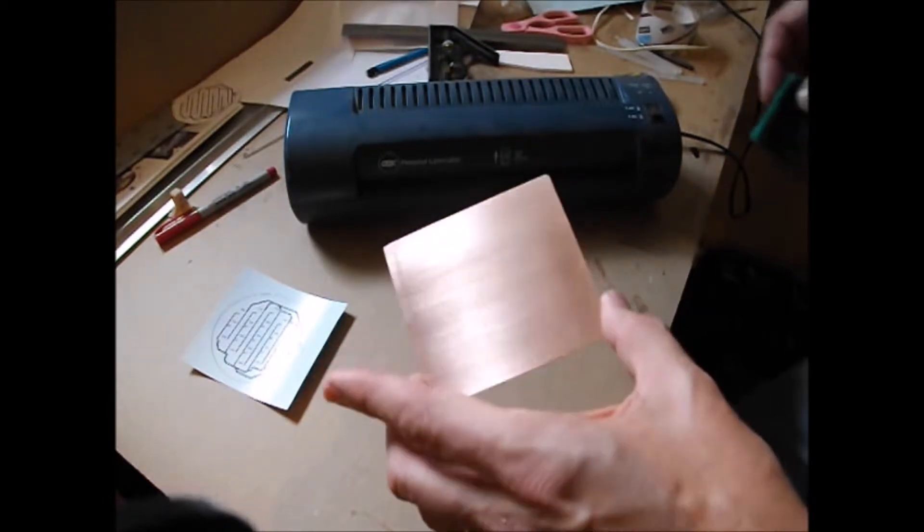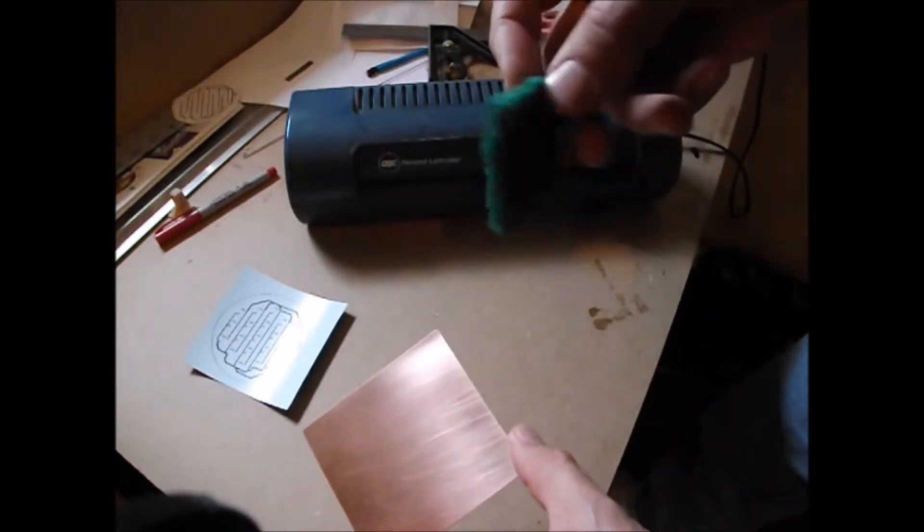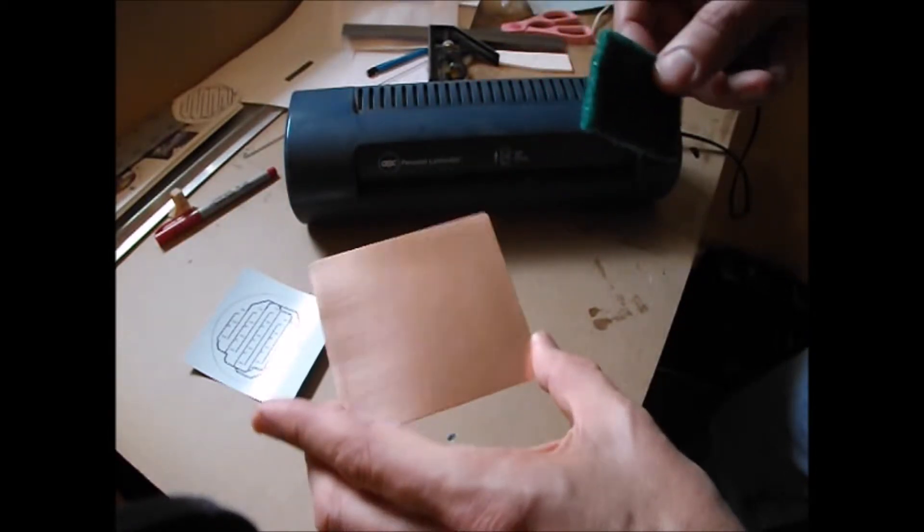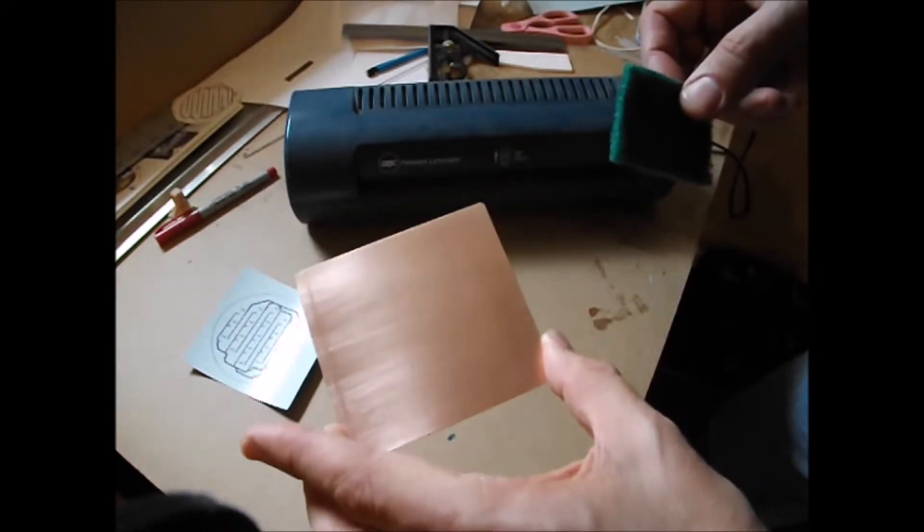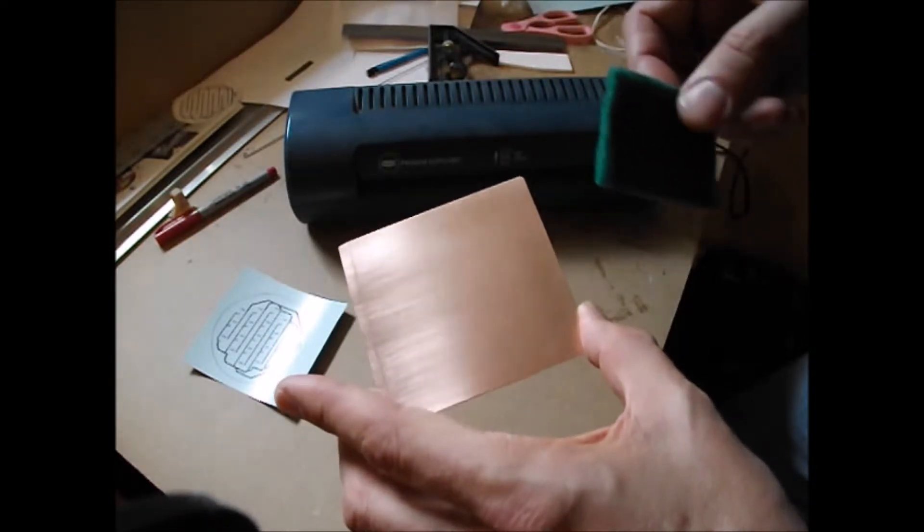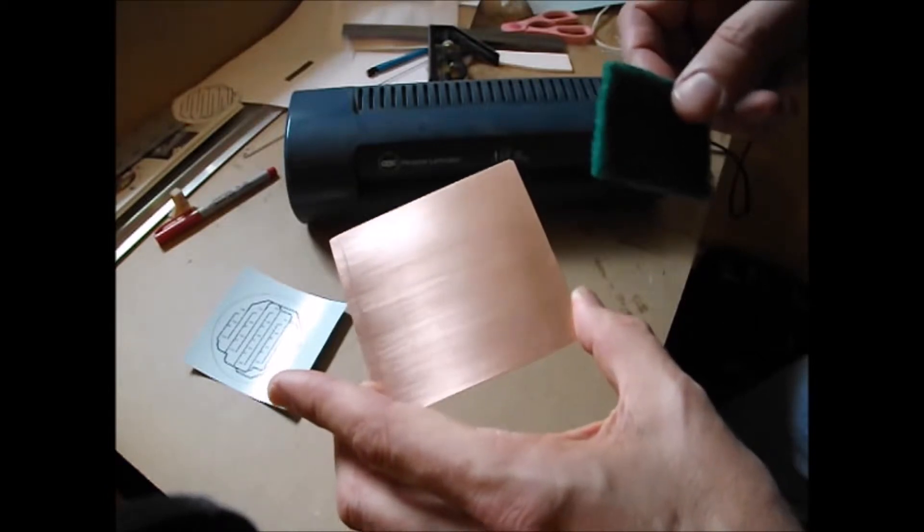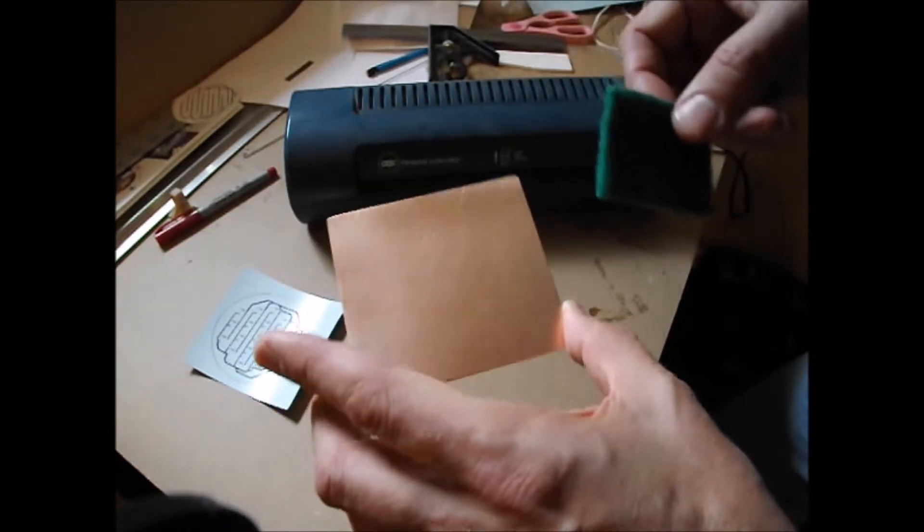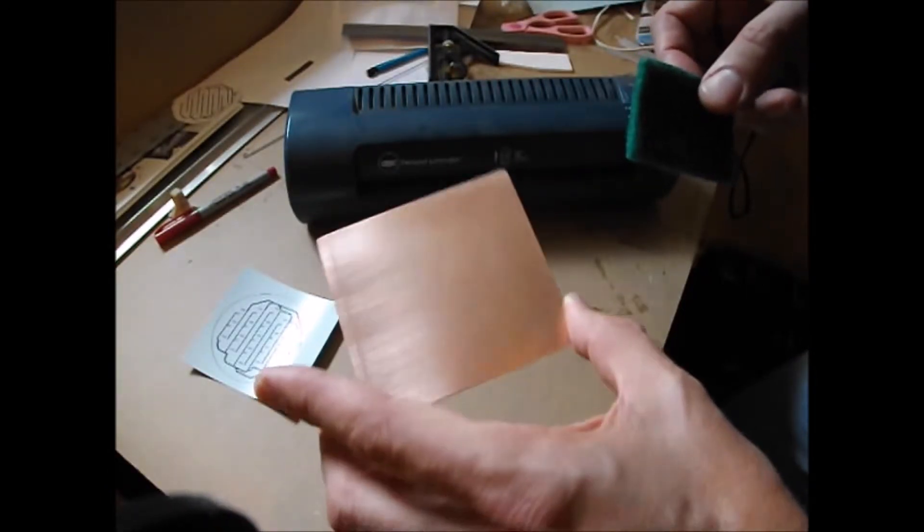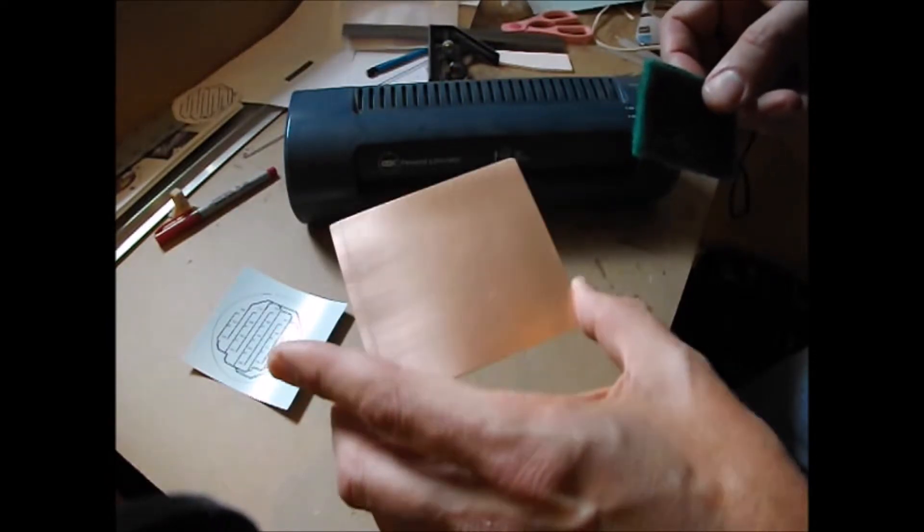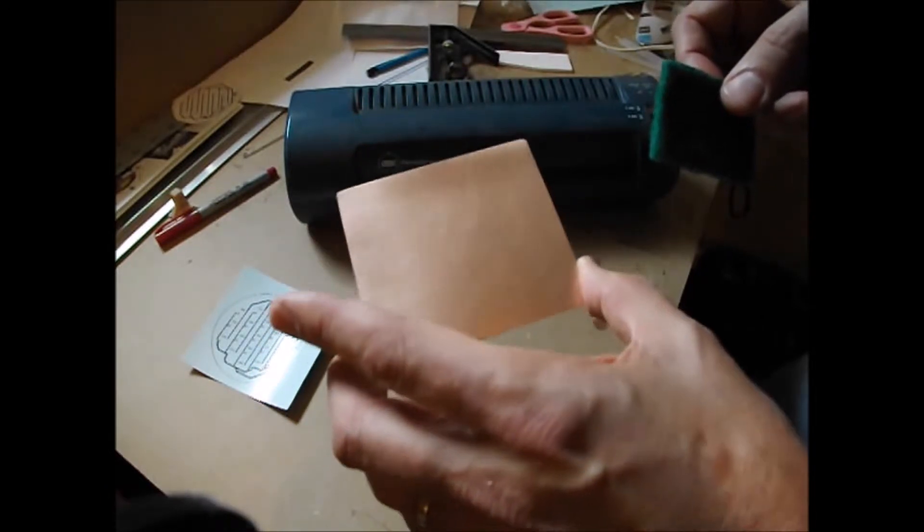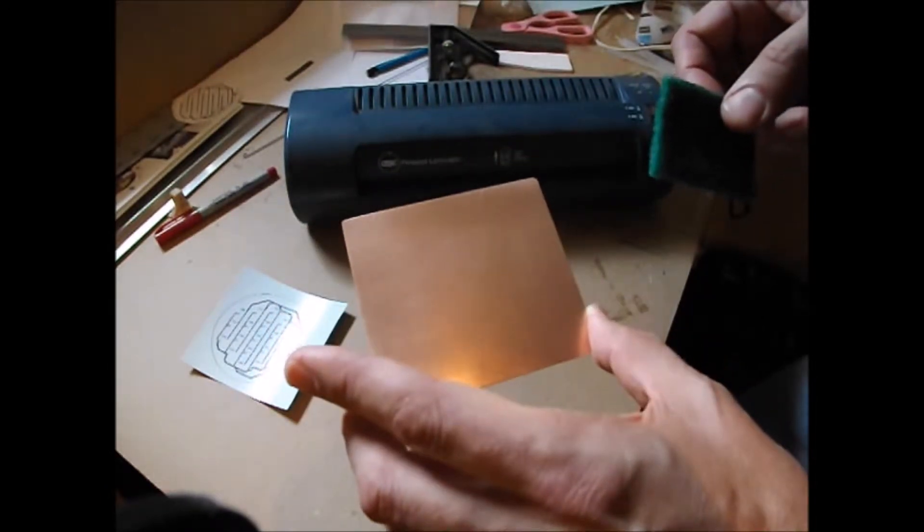I cleaned this by using a piece of scotch brite like this and some soap and water and scrubbed it for several minutes. You don't have to push hard while you're scrubbing, but you do have to cover the entire surface from several different directions and repeatedly for several minutes to make sure you get all of the oxidation off of the surface. Because without this being real clean, the toner will not stick to it.